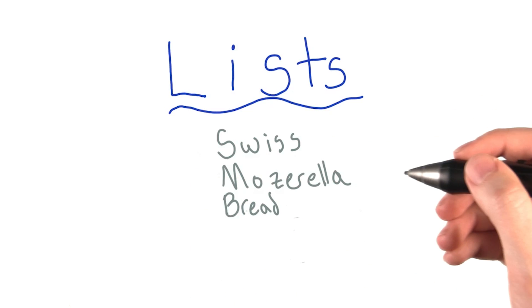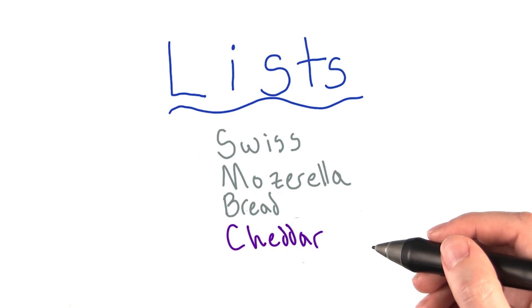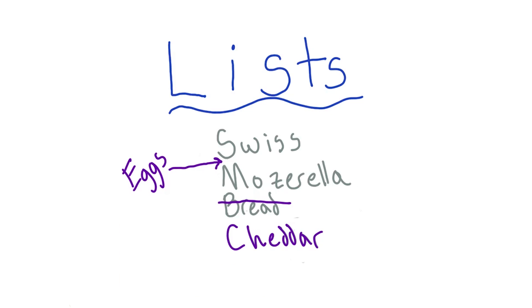The order doesn't mean much, it's just the order that I ran out of each item, and there's no fixed length. I could just keep adding things to the end, or adding and removing from the middle, and it doesn't really affect anything.